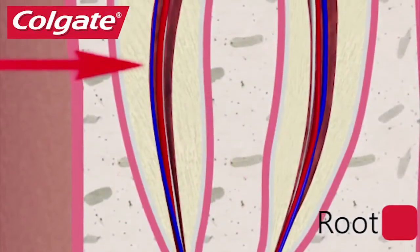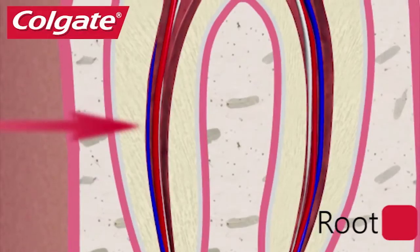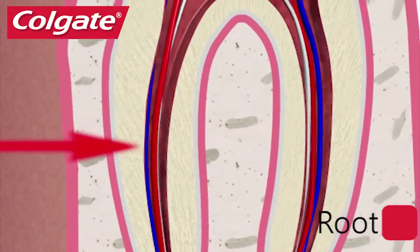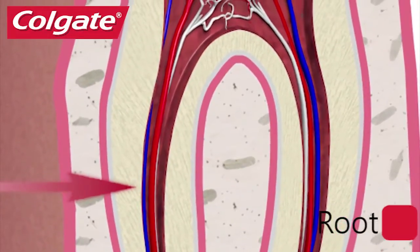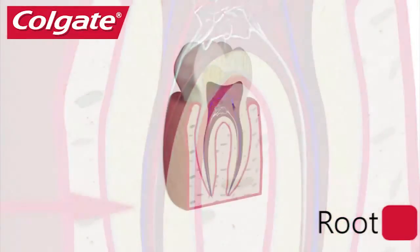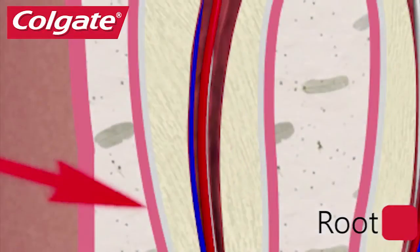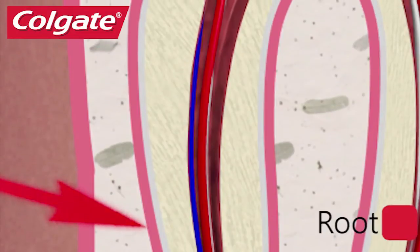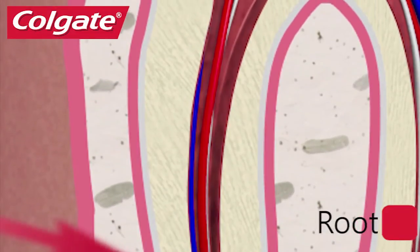The root is the part of the tooth that sits in a cone of bone covered by gums. Bone supports the tooth, and a thin ligament, the periodontal ligament, suspends the tooth in the bony cone so the tooth can move when chewing or crushing food.